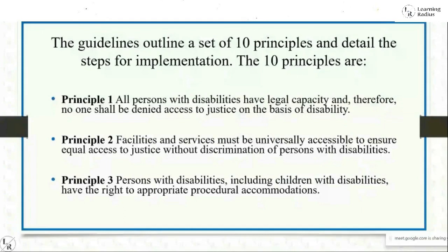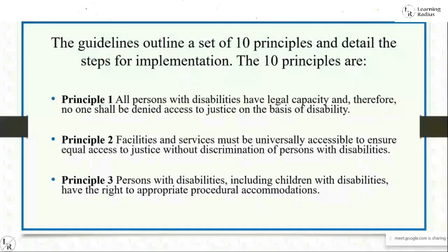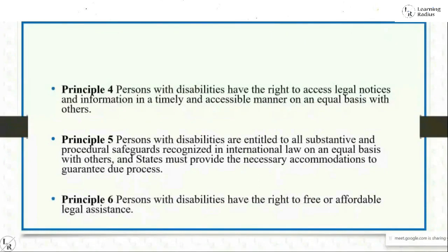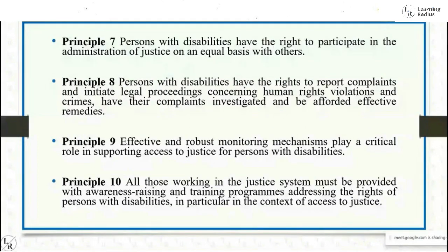The 10 principles are: Principle 1 — all persons with disabilities have legal capacity and no one shall be denied access to justice on the basis of disability. Principle 2 — facilities and services must be universally accessible to ensure equal access to justice without discrimination. Principle 3 — persons with disabilities, including children, have the right to appropriate procedural accommodation. Principle 4 — persons with disabilities have the right to access legal notices and information in a timely and accessible manner on an equal basis with others. Principle 5 — persons with disabilities are entitled to all substantive and procedural safeguards recognized in international law on an equal basis with others, and states must provide necessary accommodation to guarantee due process.